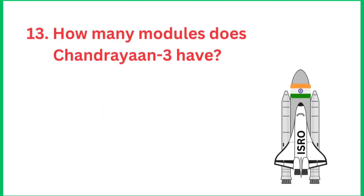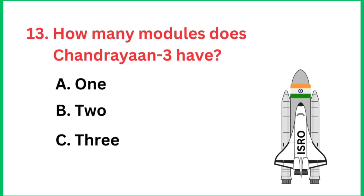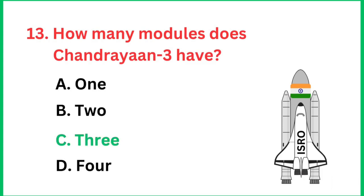How many modules does Chandrayaan 3 have? The total modules are three: propulsion module, lander module, and rover. The rover module is included within the lander module.